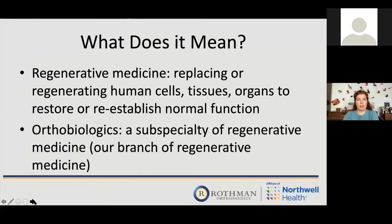When we say orthobiologics or regenerative medicine, regenerative medicine means replacing or regenerating human cells, tissues, or organs to restore or reestablish normal function — implying you had function, lost it, and we'd like to obtain it again. Orthobiologics is a subspecialty of regenerative medicine focused on how we help your muscles, tendons, and bones — how we help your skeleton move better. It's a branch within the broader field of regenerative medicine.